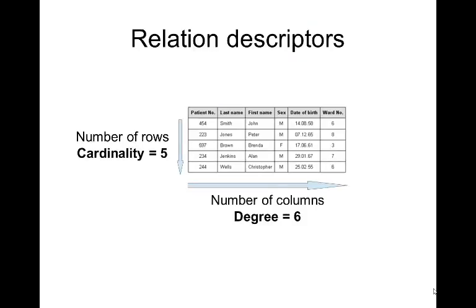Relations have attributes. The number of rows — the number of records in a relation — is called its cardinality. This appears to be a hospital database: patient number, last name, first name, sex, date of birth, ward number. We've got five patients, so the cardinality of our relation is five. The degree is the number of columns — we've got six columns. So this is a cardinality-five, degree-six table.